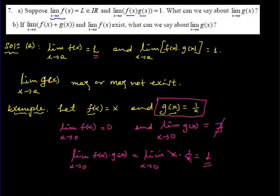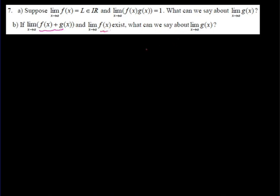If the limit of G exists, the result will be 1 over L. Now for part B: if the limit of F plus G exists and the limit of F exists, what can we say about the limit of G?